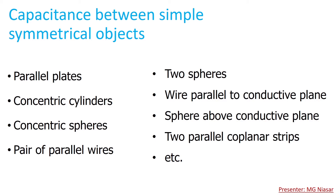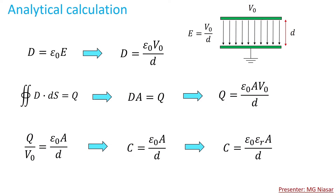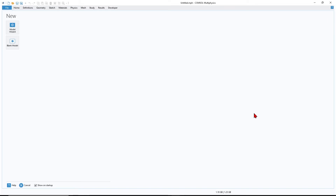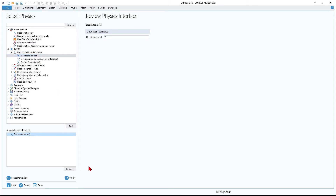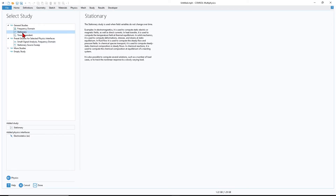Now we're going to look at how to obtain the capacitance between two conductors in COMSOL Multiphysics. As an example I'll use the parallel plate capacitor since we already know the analytical formula, and we'll verify whether the simulation values match. To start a new model, I select 2D. From the AC/DC module, select Electric Fields and Currents — Electrostatics. In the study, select Stationary.